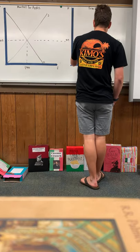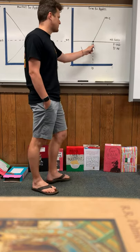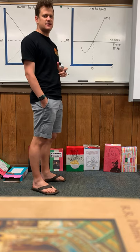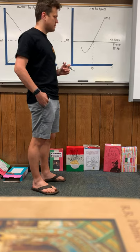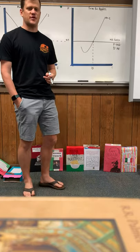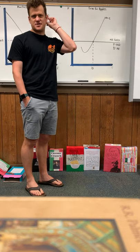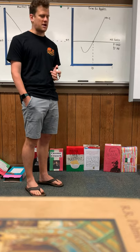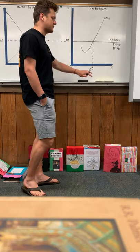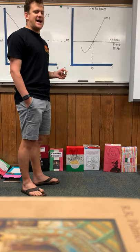The profit-maximizing quantity is always where MR equals MC. For this firm at $10, MR equals MC at 10 units, so this firm produces 10 bushels of apples. We know this from the tables we filled out — profit is maximized where MC equals MR, or as close to that quantity as possible without going over.